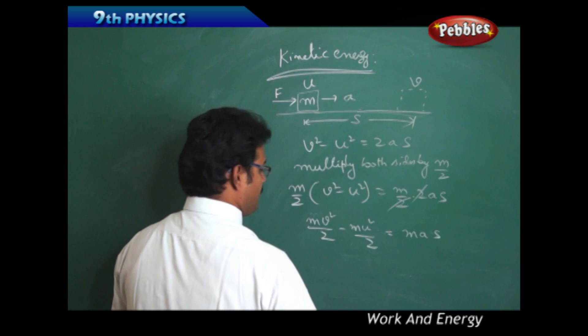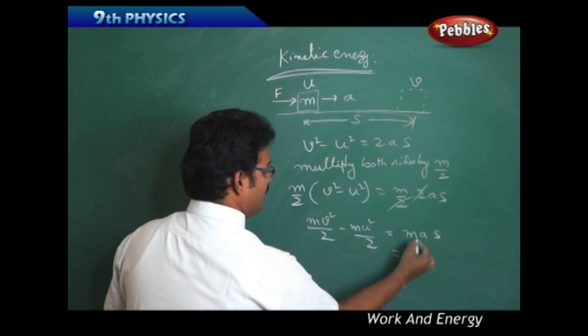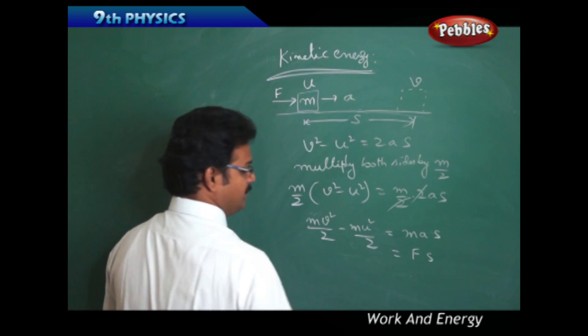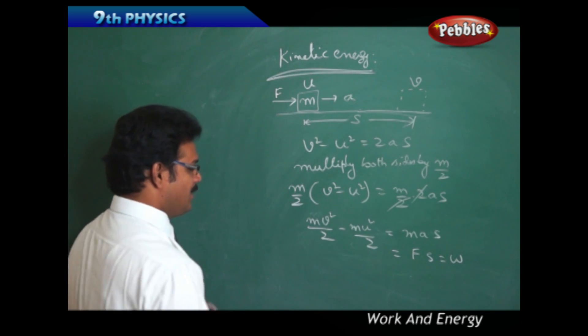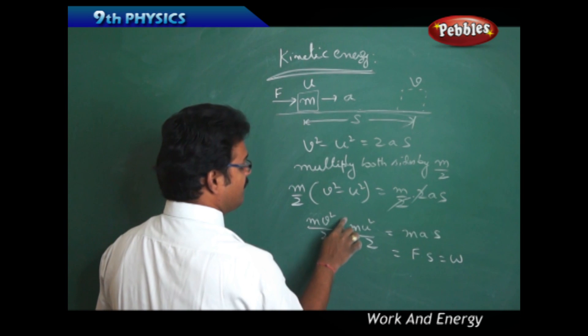Now this Ma is nothing but force times displacement, so force and displacement is nothing but work done. Let me label this equation: MV²/2 - MU²/2.